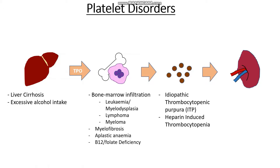We could also have an intrinsic issue with how the platelets interact with each other. So when the platelets are activated, they bind to each other using a receptor known as the GP2B3A. If that receptor is missing or dysfunctional, then the platelets cannot bind. And this is a condition that we call Glanzmann's thrombocytopenia. Another issue that could happen is that our platelets have a very difficult time binding to von Willebrand factor using the GP1B receptor.